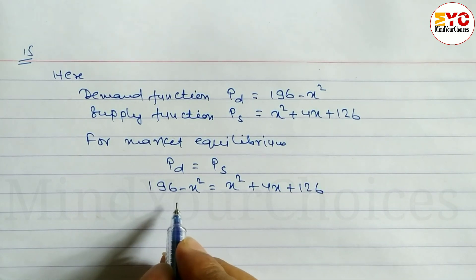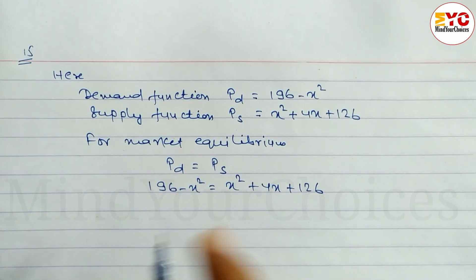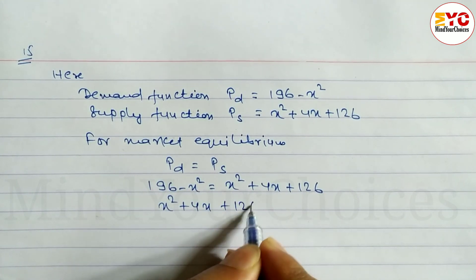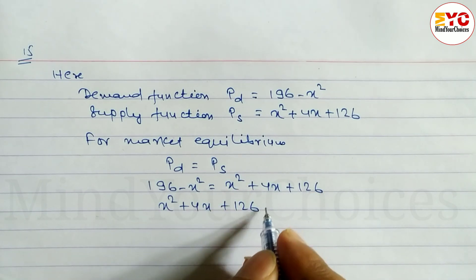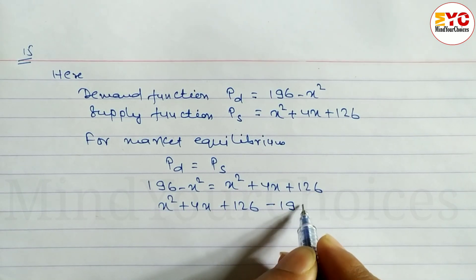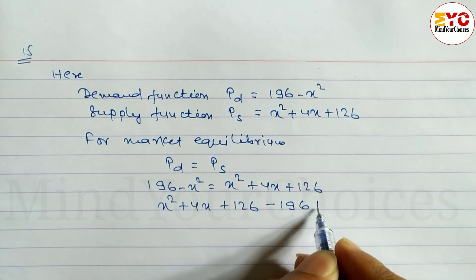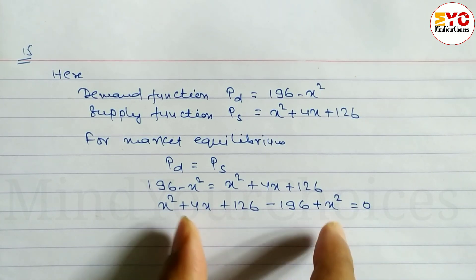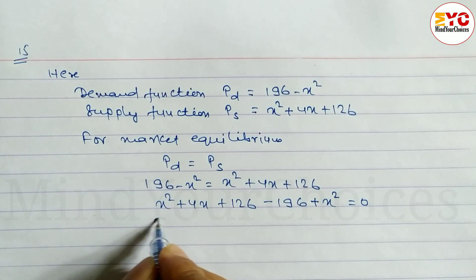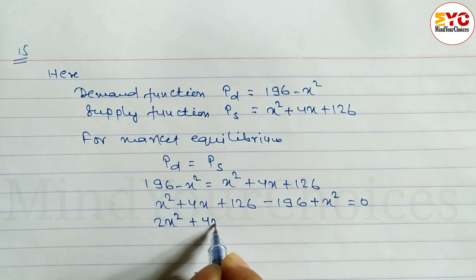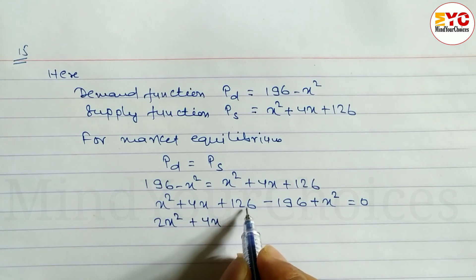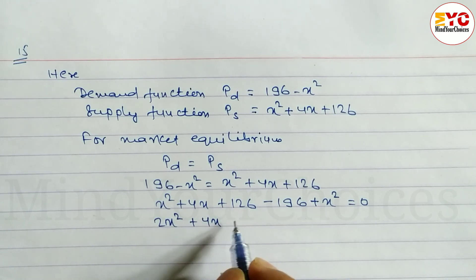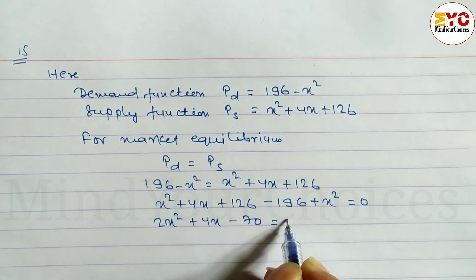Now we resolve this. Taking both terms to the right side, we get: x squared plus 4x plus 126, minus 196, and changing the sign on the left. So x squared plus x squared gives 2x squared plus 4x plus 4x, plus 126 minus 196, which gives minus 70, is equal to 0.